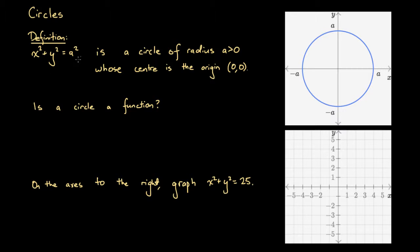The circles we're going to be looking at all take this form: x squared plus y squared equals a squared. This functional form represents a circle of some radius a, where a is a positive number not equal to zero, whose center is the origin, as graphed to the right here.